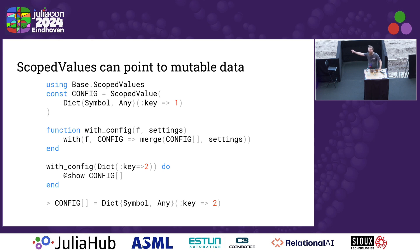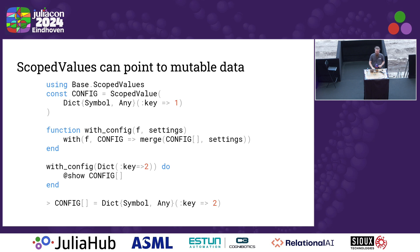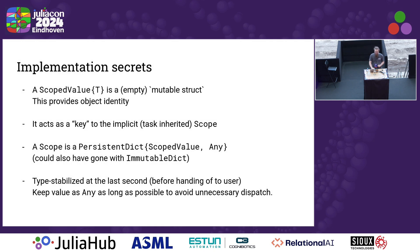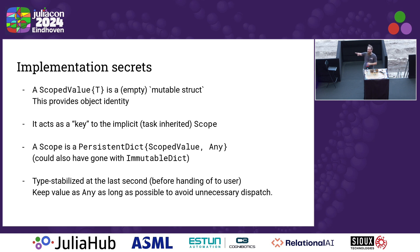While scope values are immutable, they can point to mutable data. So if I put a dictionary into a scope value, I need to think about what happens if I mutate that dictionary. My recommendation is on scope entry to create a new dictionary where you merge the values. One implementation secret is that a scope value is actually empty — it's just a mutable struct. It's mutable rather than immutable because of object identity: when you create a new scope value, it acts as a key to the hidden persistent dictionary implemented in the background.